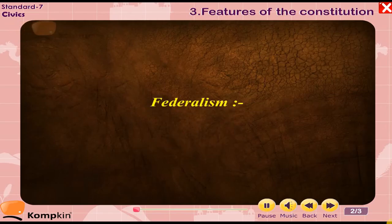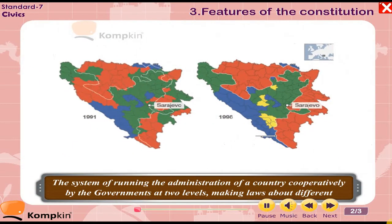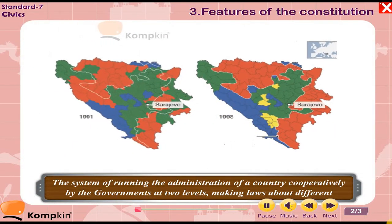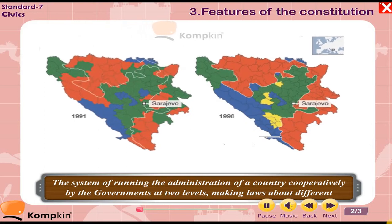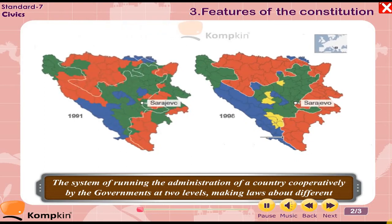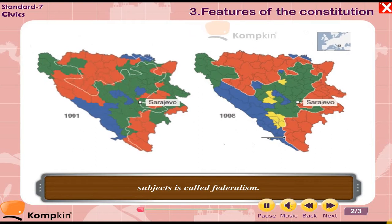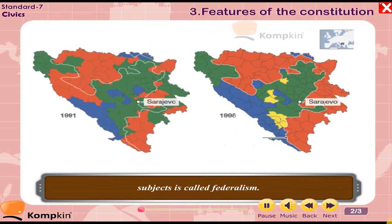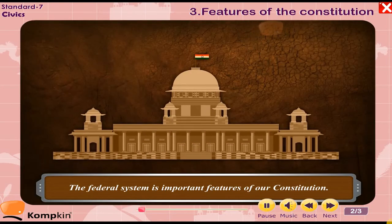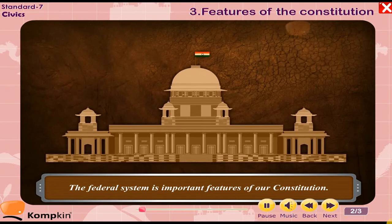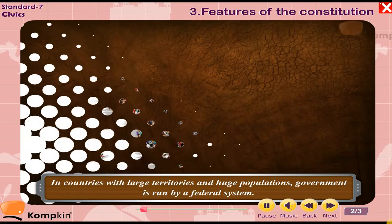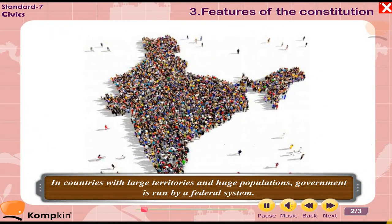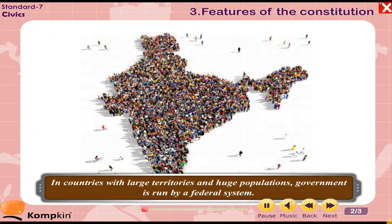Federalism is the system of running the administration of a country cooperatively by the governments at two levels, making laws about different subjects. The federal system is an important feature of our constitution. In countries with large territories and huge populations, government is run by a federal system.